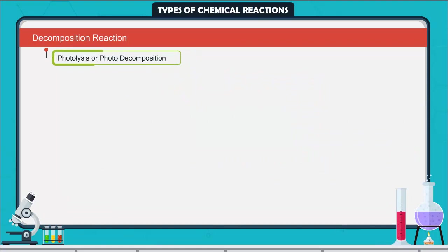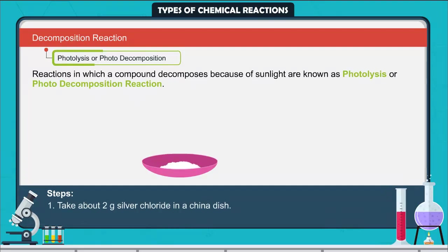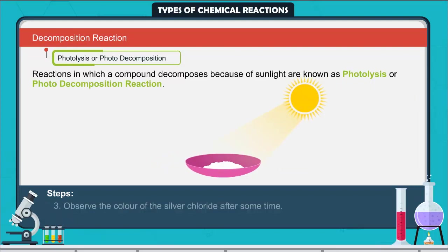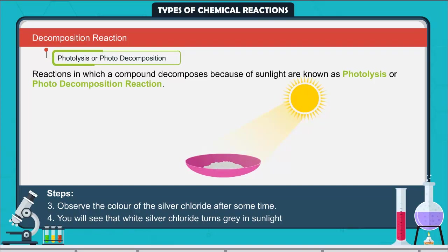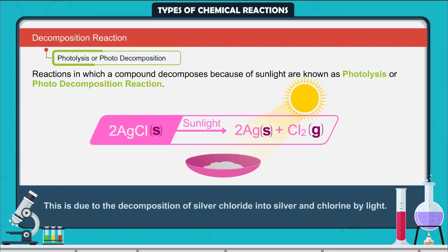Photolysis or photodecomposition reaction. Reactions in which a compound decomposes because of sunlight are known as photolysis or photodecomposition reactions. Take about 2g of silver chloride in a china dish and place it in sunlight for some time. Observe the color of the silver chloride. You will see that white silver chloride turns gray in sunlight. This is due to the decomposition of silver chloride into silver and chlorine by light.